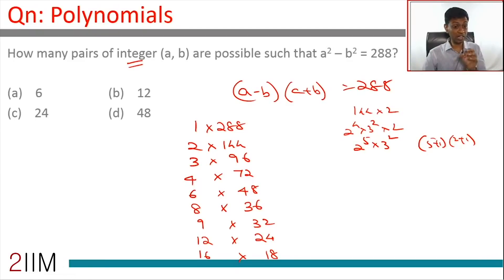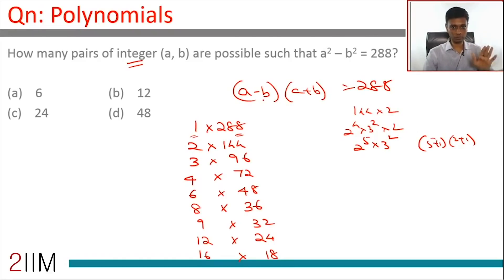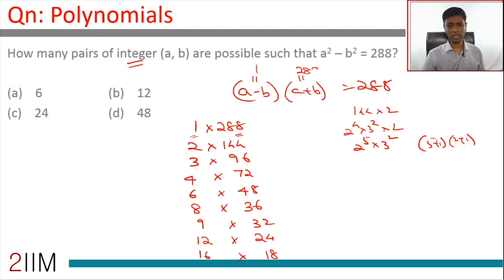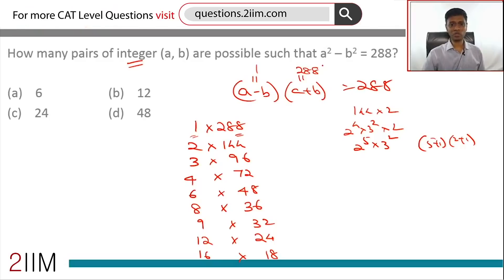Now, when we write (a minus b)(a plus b) = 288, a minus b should be the smaller number and a plus b should be the larger number. For example, a minus b into a plus b must be 1×288, not 288×1. So the difference of two numbers is 1 and the sum is 288.